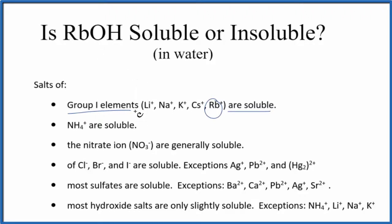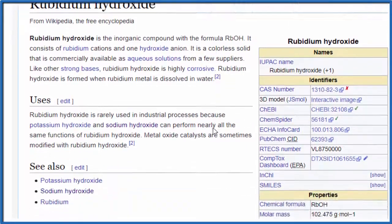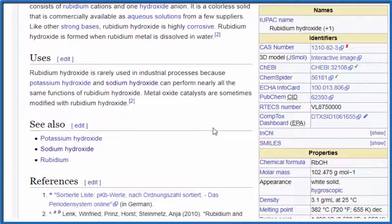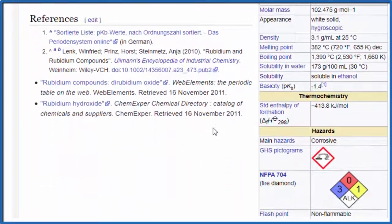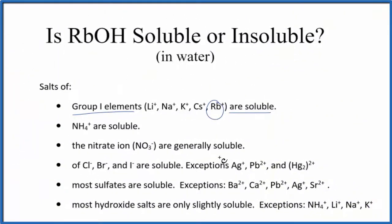If we looked on a solubility chart, the type we're given in school probably won't find rubidium, but let's look at some experimental data just to check and make sure we have the right idea here. So here's our rubidium hydroxide, looking for solubility, and here's solubility: 173 grams per 100 milliliters of water at 30 degrees Celsius — that's very soluble.